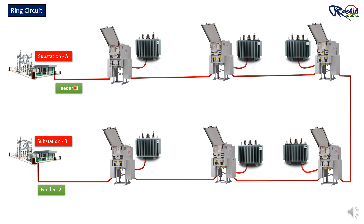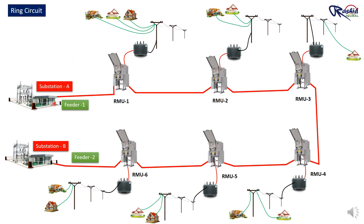Through this layout, I am trying to explain how the system works. In this ring main distribution network, we have two feeders — Feeder 1 and Feeder 2 — supplying power to 6 transformers, each connected through their respective RMU to the feeders. Normally, power flows from Feeder 1 through each RMU, which then supplies electricity to the connected transformers. Each transformer steps down the voltage to a level suitable for the load, like homes, offices, and other buildings.